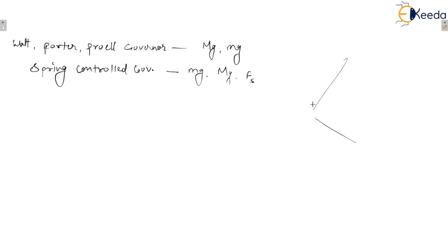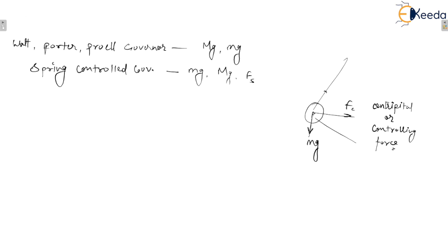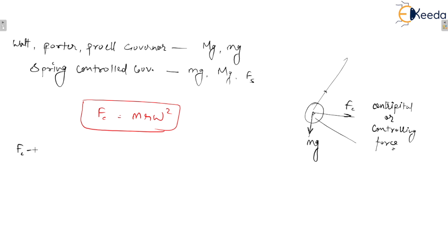If you want to see the diagram, this is the fly ball and there is a centripetal force — or controlling force — acting on it. The formula is FC = mRω². This is the formula for controlling force. So the controlling force diagram is plotted between FC and radius R. With the help of the controlling force diagram, we can check the stability and isochronicity of the governor.